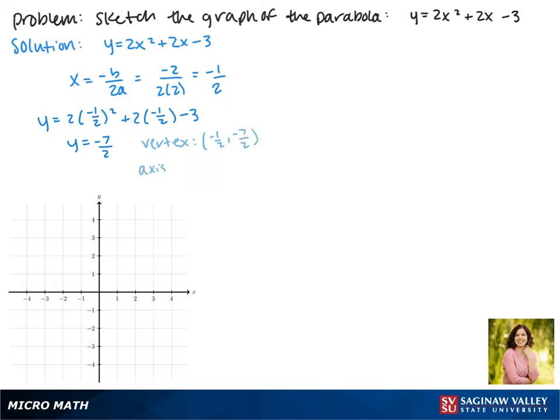Our axis of symmetry is the x value. It will be the line x equals negative 1 half. What that looks like is a vertical line that passes through negative 1 half, and the vertex is on this line at negative 7 halves.